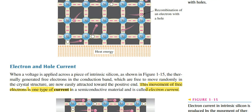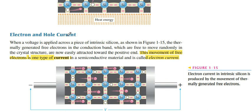The next point is electron and hole current. When we apply a voltage to a pure silicon crystal, the electrons move from the negative to the positive terminal, while the holes move from positive to negative. This movement of electrons is called electron current, and the holes move in the opposite direction, which is called the hole current.